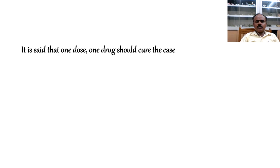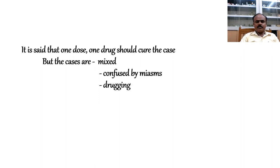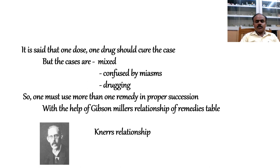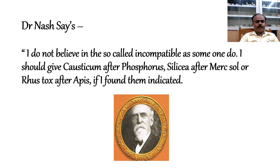Commonly it is said that one dose, one drug should cure the case. But when we really go through the case, we find cases are mixed and confused by miasms or over-drugging. So one must use more than one remedy in proper succession with the help of Gibbs and Miller's relationship of remedies table found in Boericke's Materia Medica. Dr. Nash says he does not believe in the so-called incompatibles; he would give Causticum after Phosphorus, Silicea after Mercury, or Rhus Tox after Apis if found indicated, giving more stress to the law of similars in prescribing.